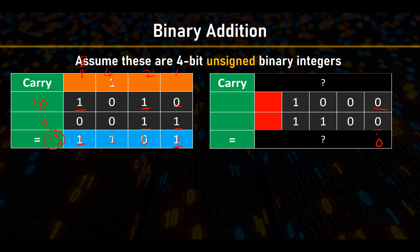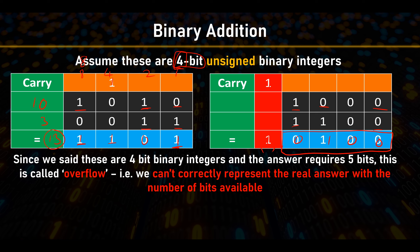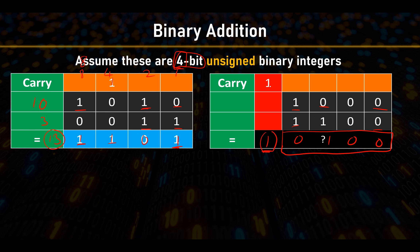For the next example: zero plus zero is zero; zero plus one is one; one plus one is zero, carry one; one plus zero plus zero gives a carry-out of one. Since we only have four bits, we write that carry-out result in brackets to show it exists but isn't stored. In the exam, if you don't write that carry-out bit, they'll dock you a mark.